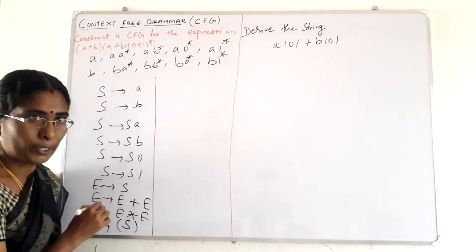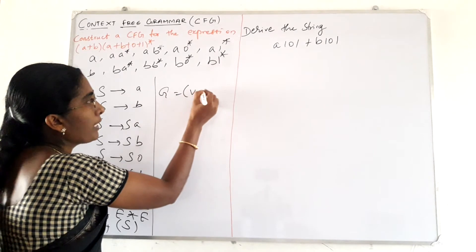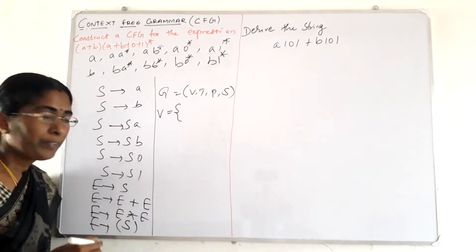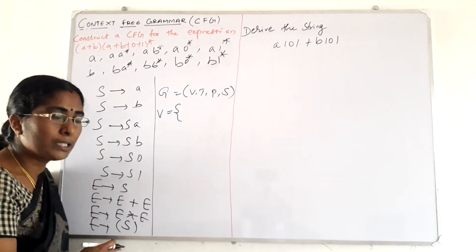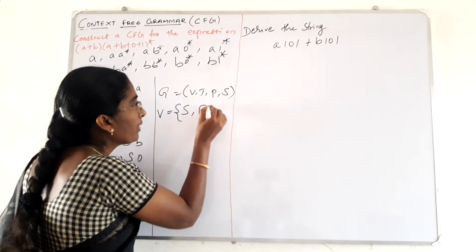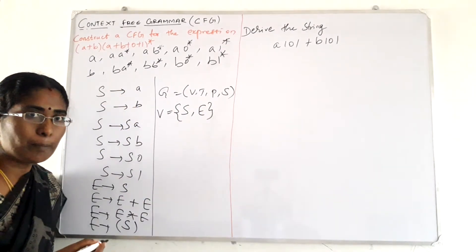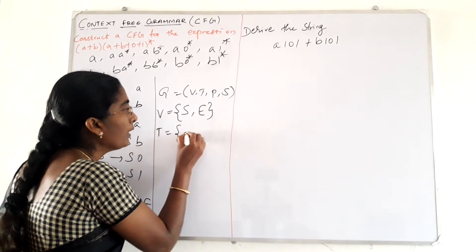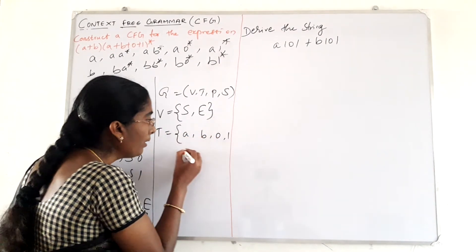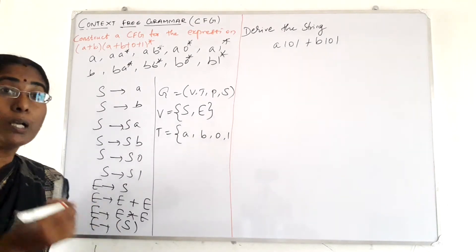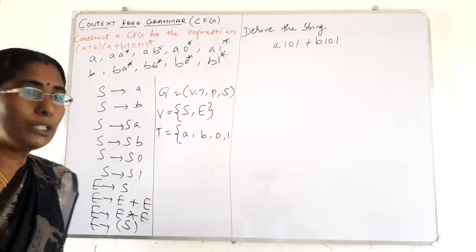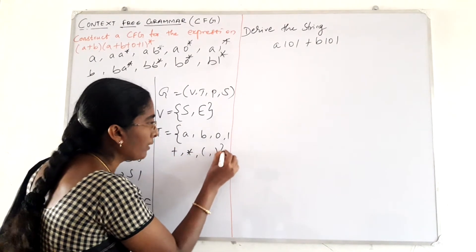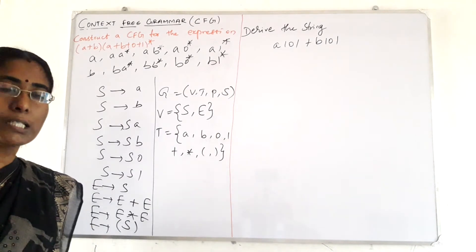These are the set of productions used to represent this expression — the basic condition of either A or B, followed by A, B, 0, or 1, plus operator-based productions. Grammar G is defined by 4-tuple (V, T, P, S). The variables used in this grammar are S and E.